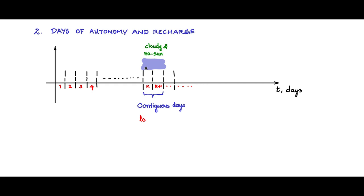These are the contiguous days and the load has to be supported entirely by the battery. There is no support from the PV or the solar, and these days of operation is called autonomous operation.